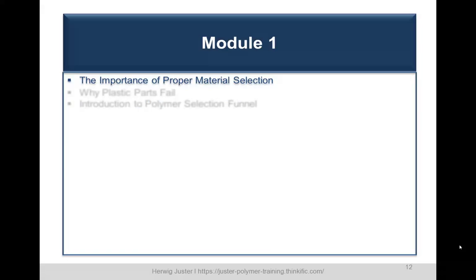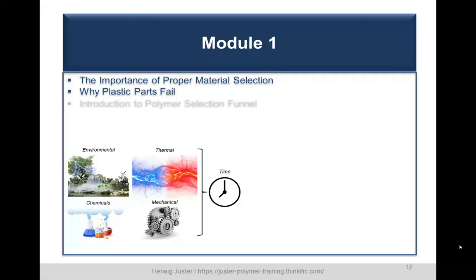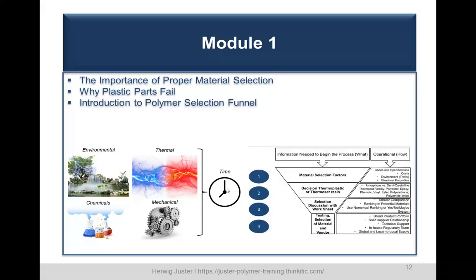Module one covers the importance of proper material selection and discusses why plastic parts fail — addressing environmental, thermal, chemical, and mechanical reasons combined with time. I will also introduce a system to select polymers in a systematic way, which I call the polymer selection funnel — a four-step process.